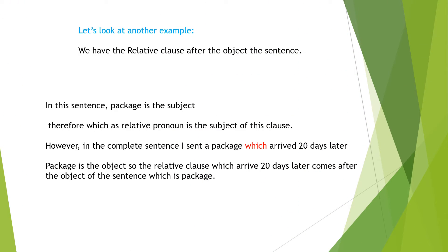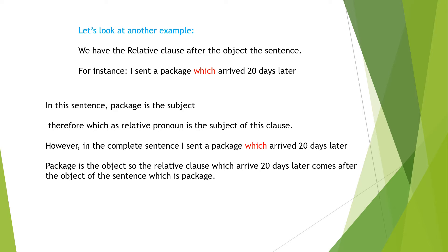Now let's look at another example — a relative clause after the object of the sentence. For instance: 'Sign any package which arrives 20 days later.' In this sentence, 'package' is the subject and 'which' is the relative pronoun. However, in the complete sentence, 'package' is the object, so the relative clause 'which arrived 20 days later' comes after the object.